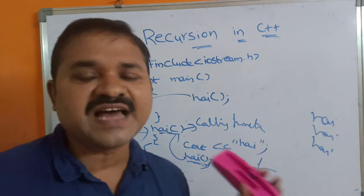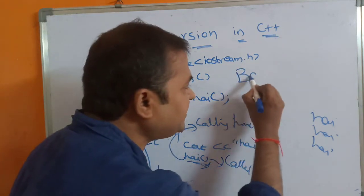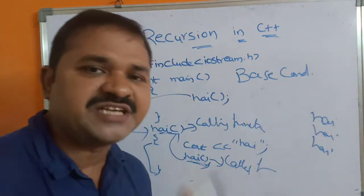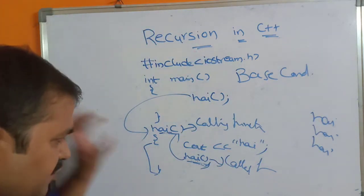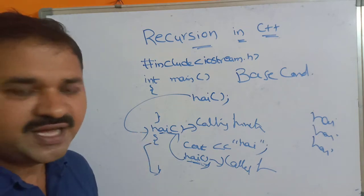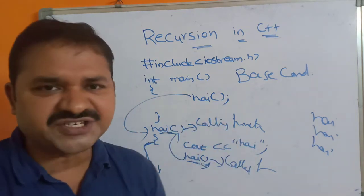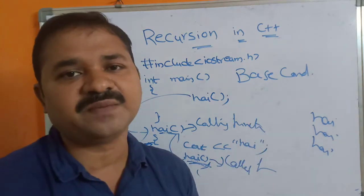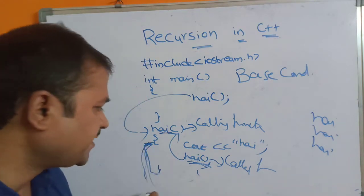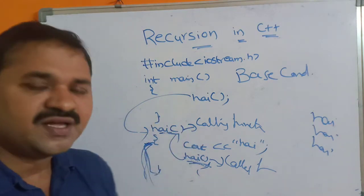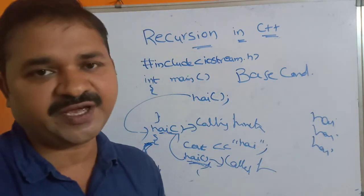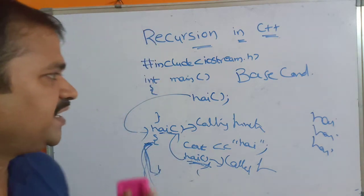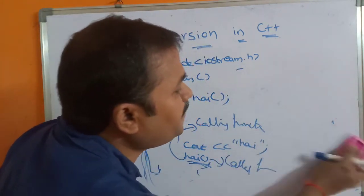While implementing recursion, we must use a base condition. Whenever that base condition is executed, the control will come out from the recursive function. In this function we don't have any base condition, so this high function will be called an infinite number of times. If you want to come out from this function, we have to use a base condition — that we will see later in a factorial program.